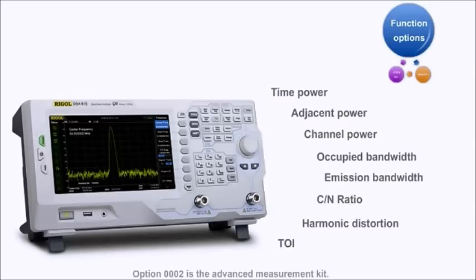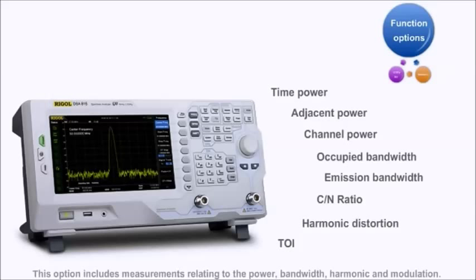Option number two is the advanced measurement kit. This option includes measurements relating to power, bandwidth, harmonic distortion, and modulation.